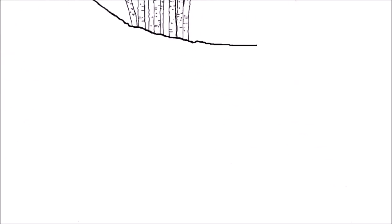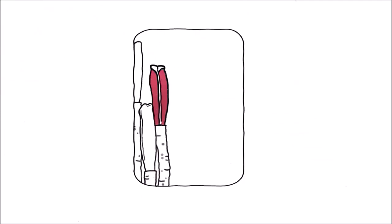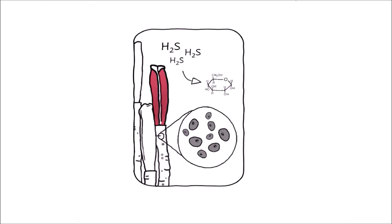Remember those tube worms I showed you? They don't have a mouth or an anus. They only have a lung to breathe in the chemicals of the surrounding water, and that's very rich in a chemical called hydrogen sulfide. Now, they have millions of bacteria sitting in their guts, that's called a trophosome, safe and warm, using up this energy-rich chemical and producing sugar. This is called chemosynthesis.